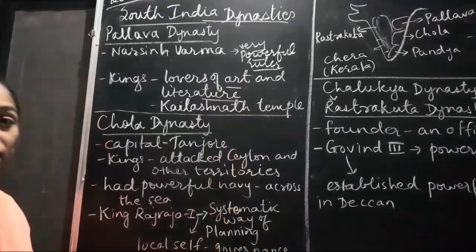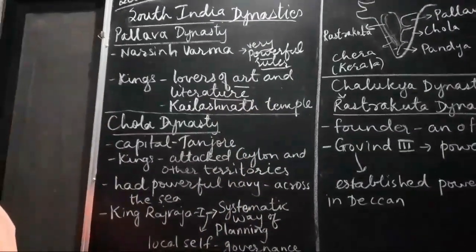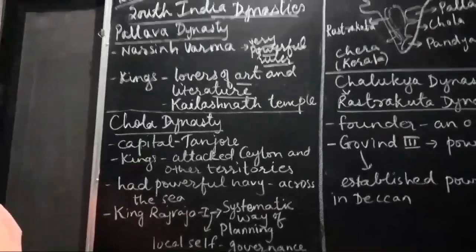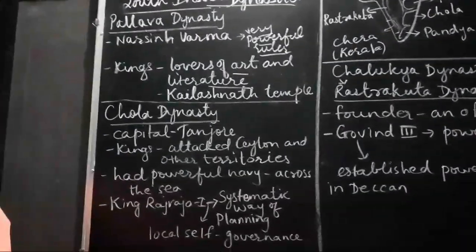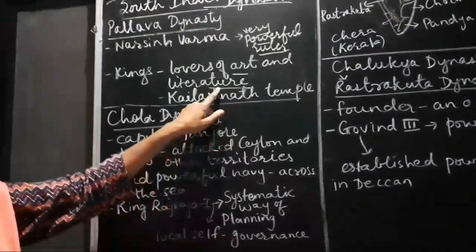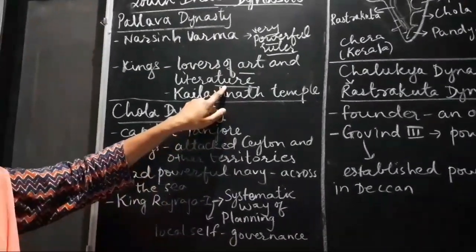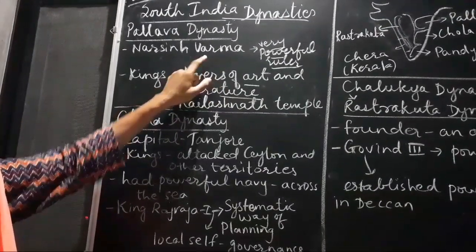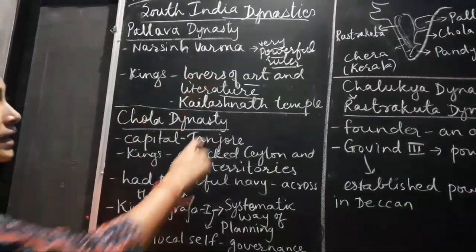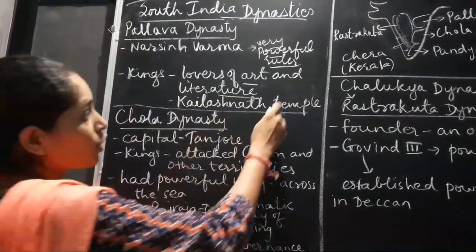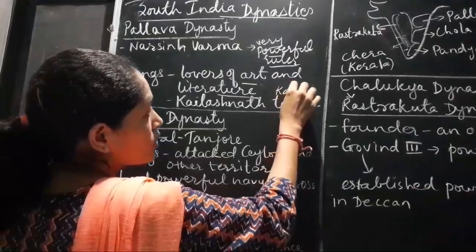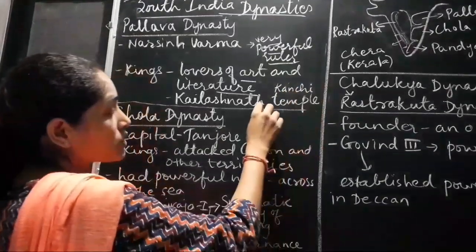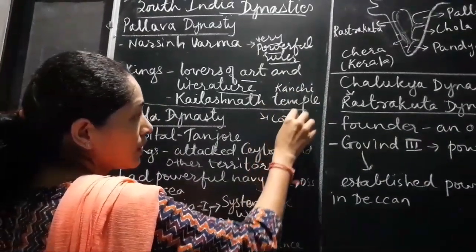They were interested in paintings, drawings and also literature. During that time, so many books and literature were written during the reign of these kings. The Kailashna temple of Kaachi was built during this time and it was dedicated to Lord Shiva.